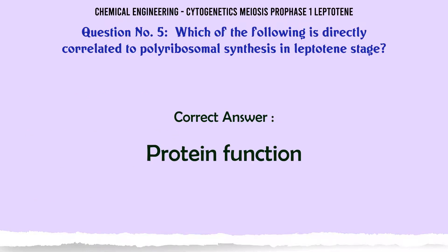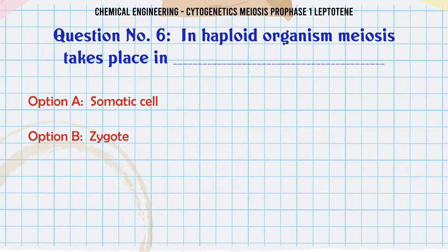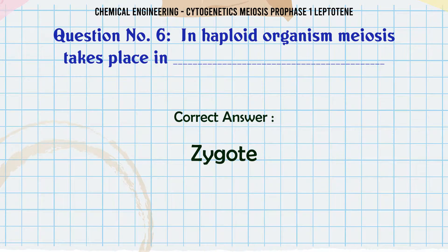In a haploid organism, meiosis takes place in: A. Somatic cell. B. Zygote. C. Gamete. D. Egg. The correct answer is: Zygote.